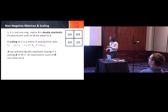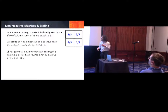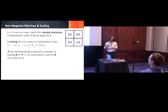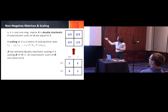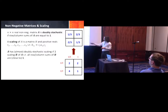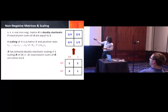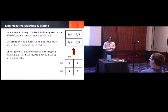We say that A has an almost doubly stochastic scaling if there exists a scaling B of A such that all rows and column sums of B are close to one — say, one plus or minus epsilon. For example, this matrix has a doubly stochastic scaling: if you scale the rows by one-third and one-third, and the columns by one-half and one, you get the doubly stochastic matrix shown above.